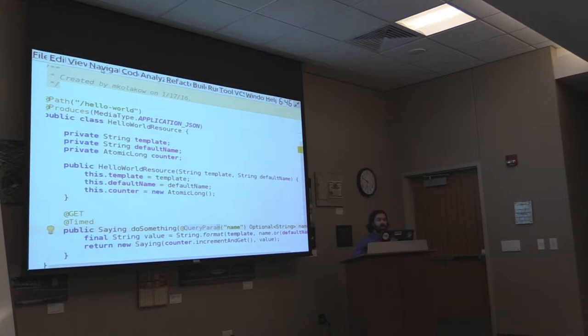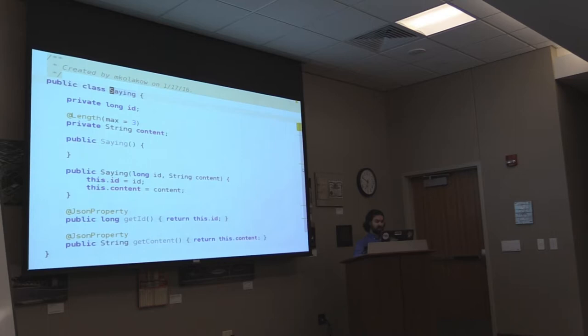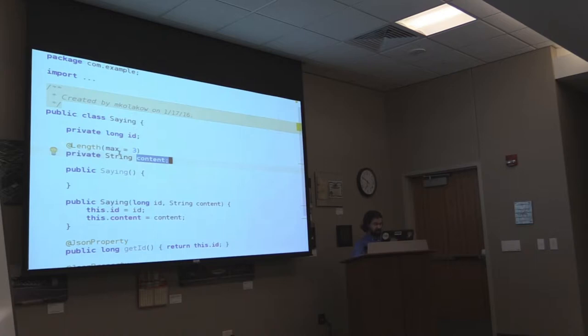The representation is basically a simple POJO. We needed something to instantiate and say this is what we want our response to look like. It just has an ID and content in it — nothing terribly complicated.